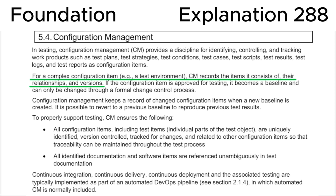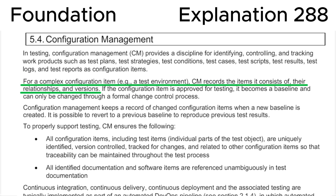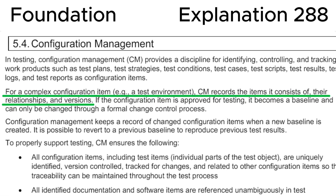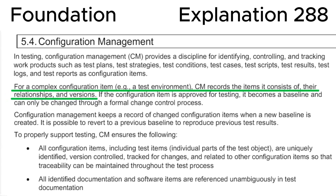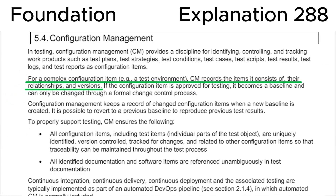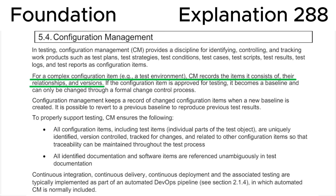Looking at section 5.4, Configuration Management, in the ISTQB syllabus, we can see that for a complex configuration item, for example a test environment, configuration management records the items it consists of, their relationships and versions. This is fully consistent with the correct answer A. Use this amazing opportunity to prepare for the ISTQB Certified Tester Foundation Level exam and you will pass it for sure.